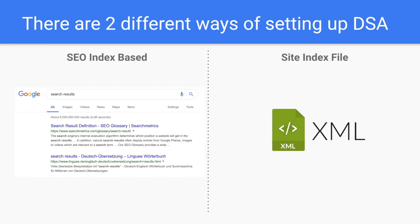There are two different ways of setting up DSA. One: if your site already exists for some time, use the SEO index-based way. You just tell Google, 'Hey, you already know my site, you already know the pages, you know what people are looking for — just use this information for my paid advertising.' That's all you have to do. And that's the best way — at least I like it because it's a very lazy and very fast way that works really well.